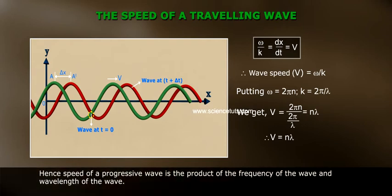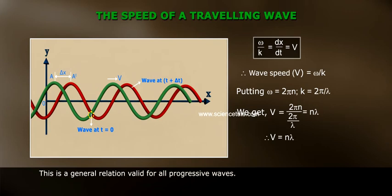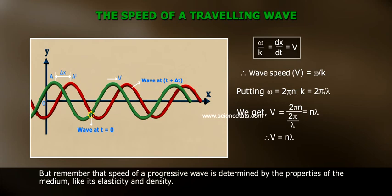Hence, speed of a progressive wave is a product of the frequency of the wave and the wavelength of the wave. This is a general relation valid for all progressive waves. But remember that the speed of a progressive wave is determined by the properties of the medium, like its elasticity and density.